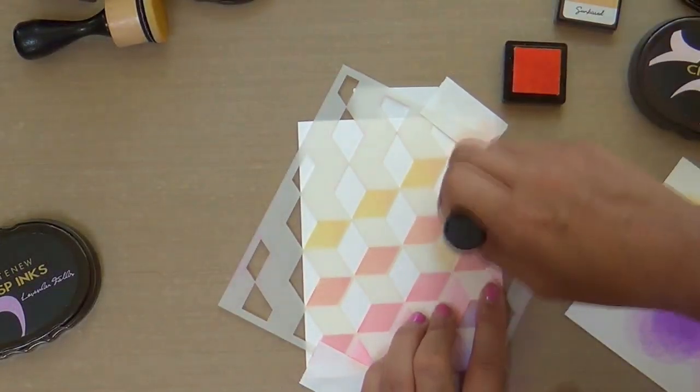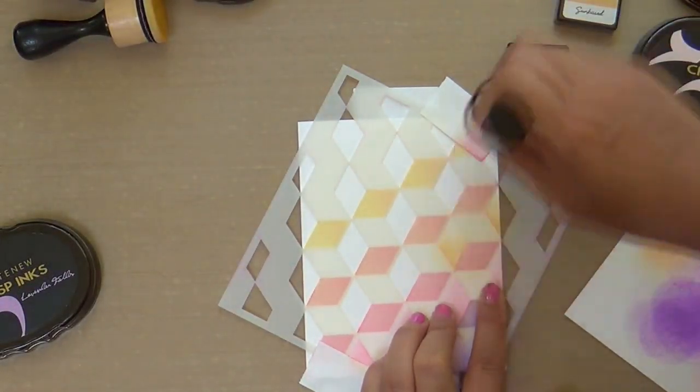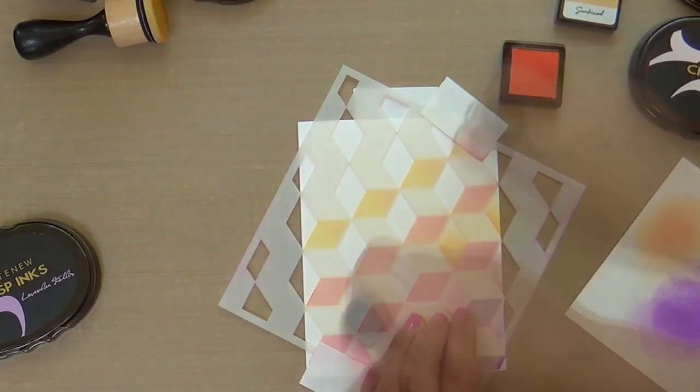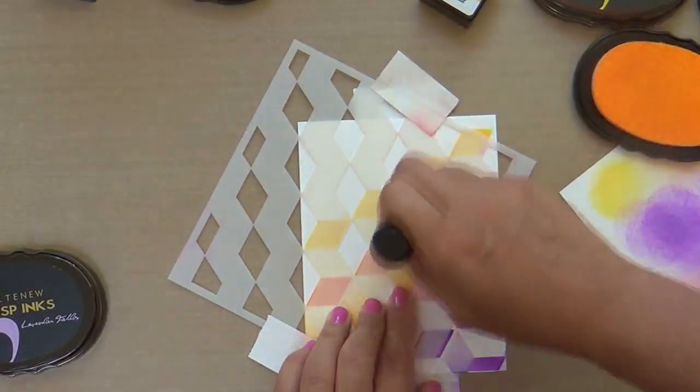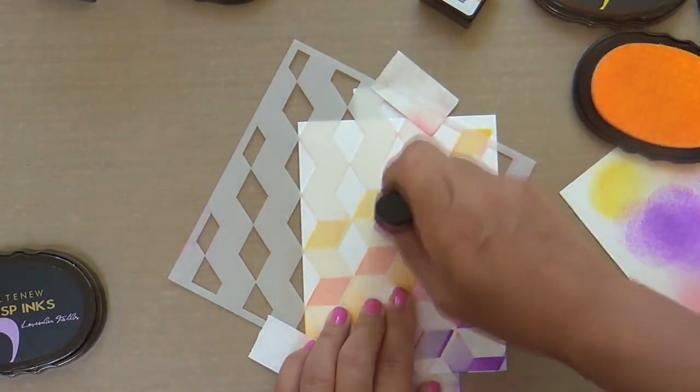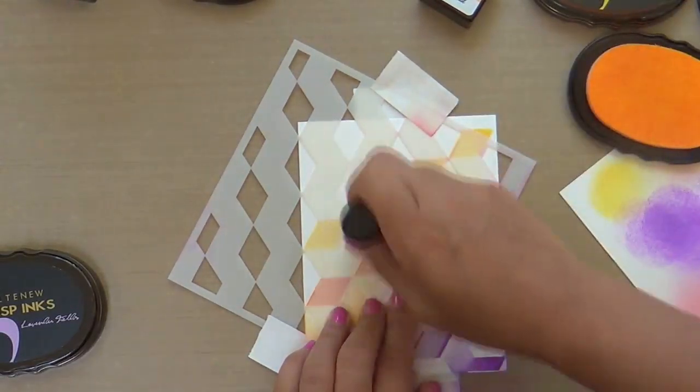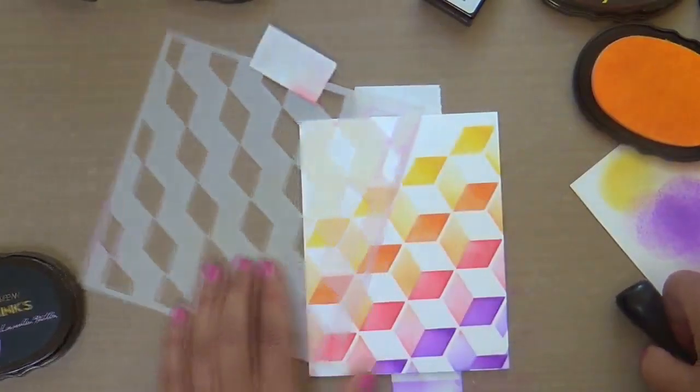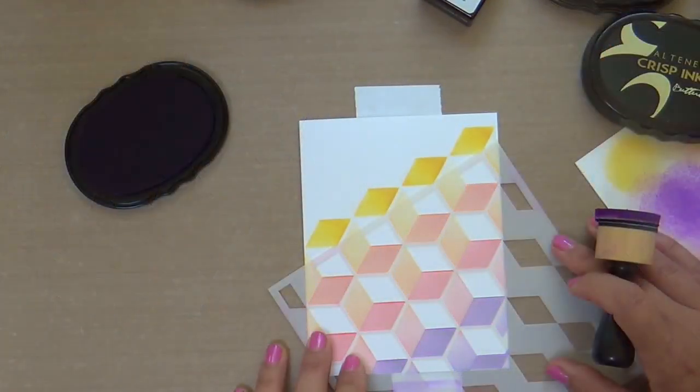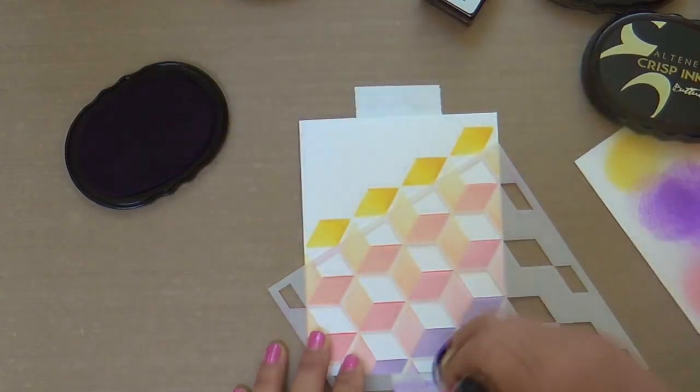Then for the orange I use sunkissed. Look at how effortless this is. We're building that three-dimensional cube look. For the final one I did buttercream which is the lighter shade from warm sunshine. You can see really how easy this is to build this fantastic cube pattern.